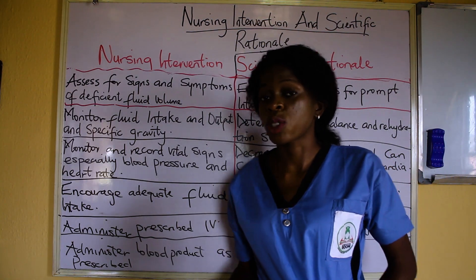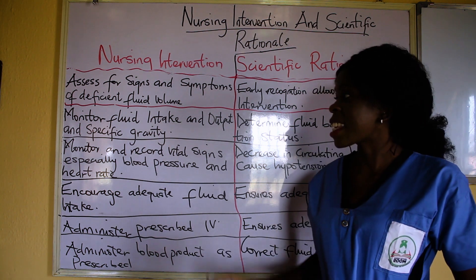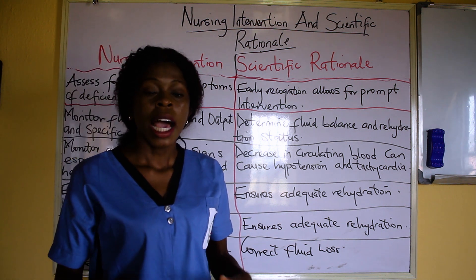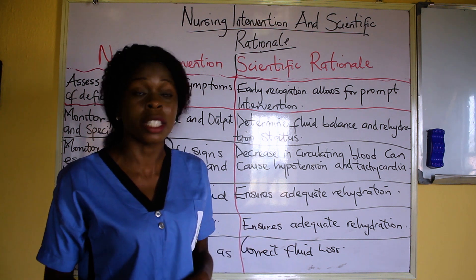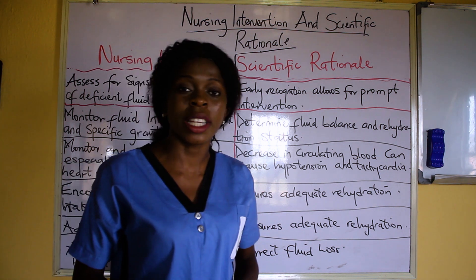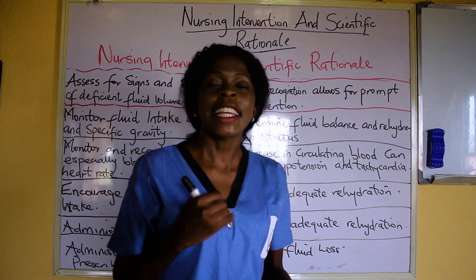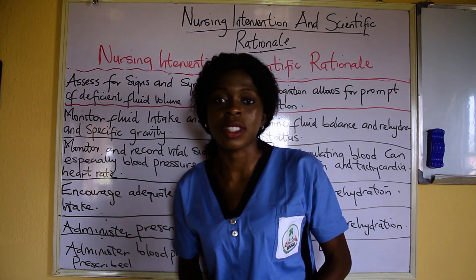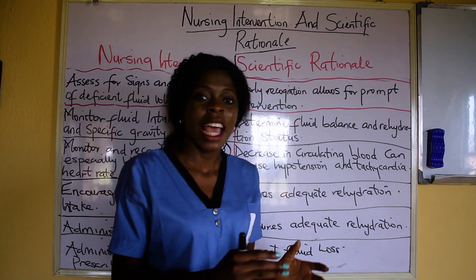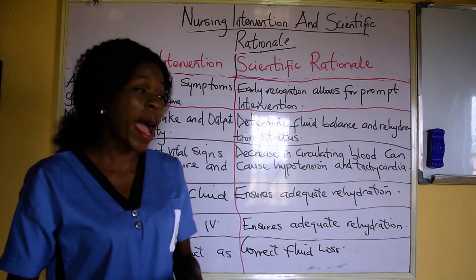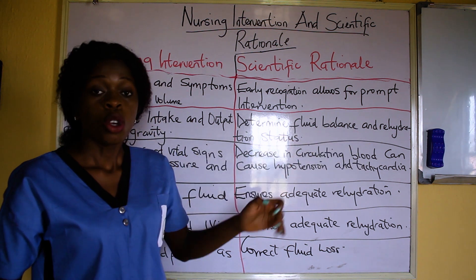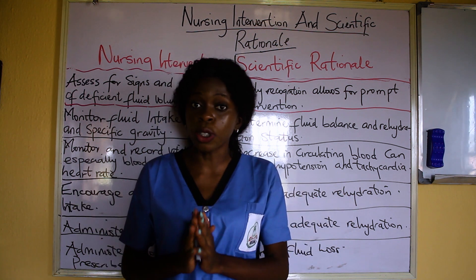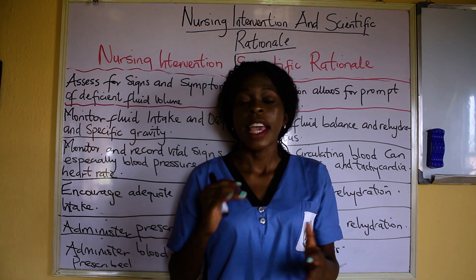The last nursing diagnosis we'll cover today is deficient fluid volume. As always, the first intervention is assess for signs and symptoms of deficient fluid volume — early recognition allows for prompt intervention. Another intervention is monitor fluid intake and output alongside specific gravity of urine. This determines fluid balance and rehydration status. When the specific gravity of urine is very high, it indicates dehydration — the fluid is not enough in the body.